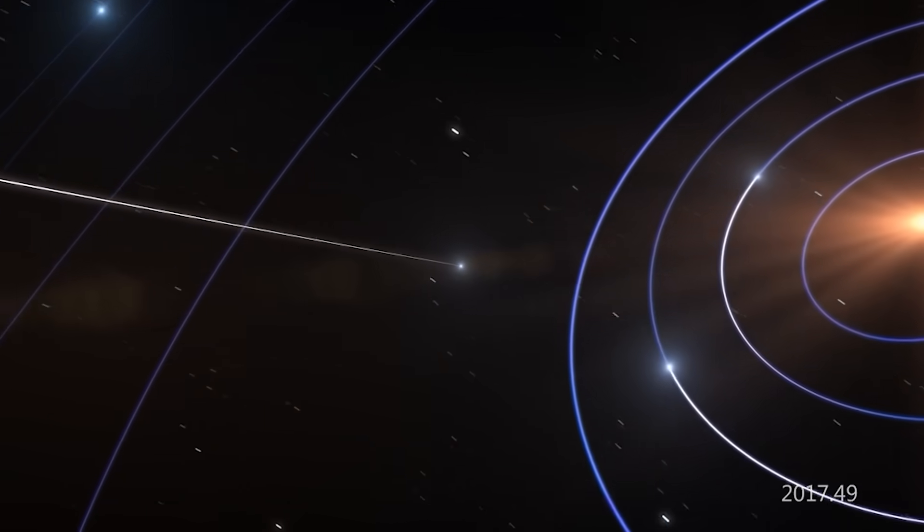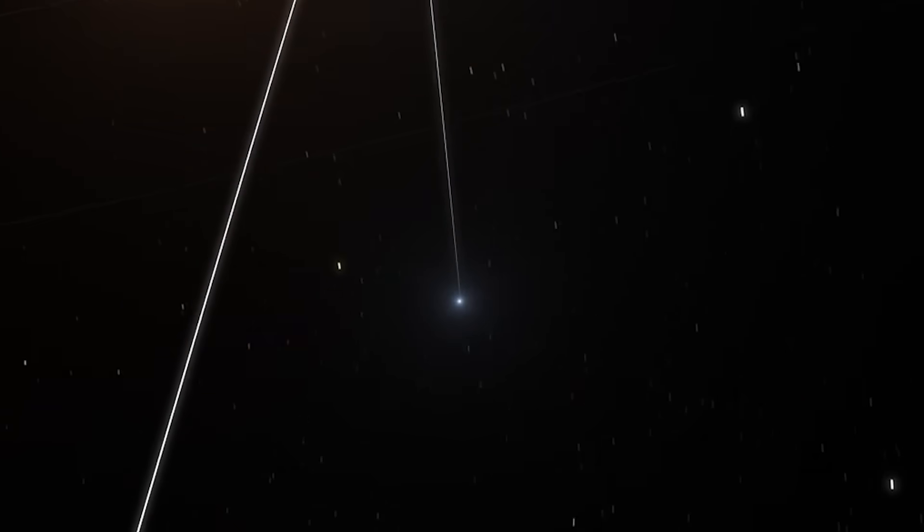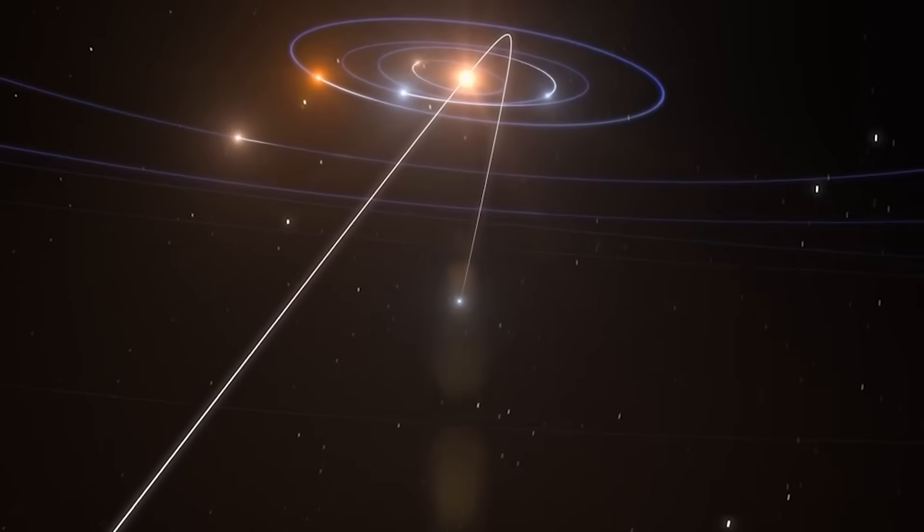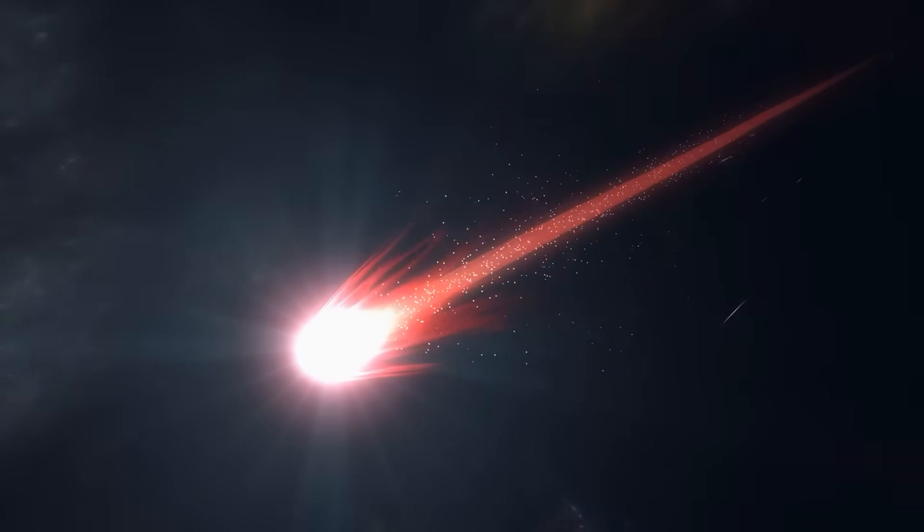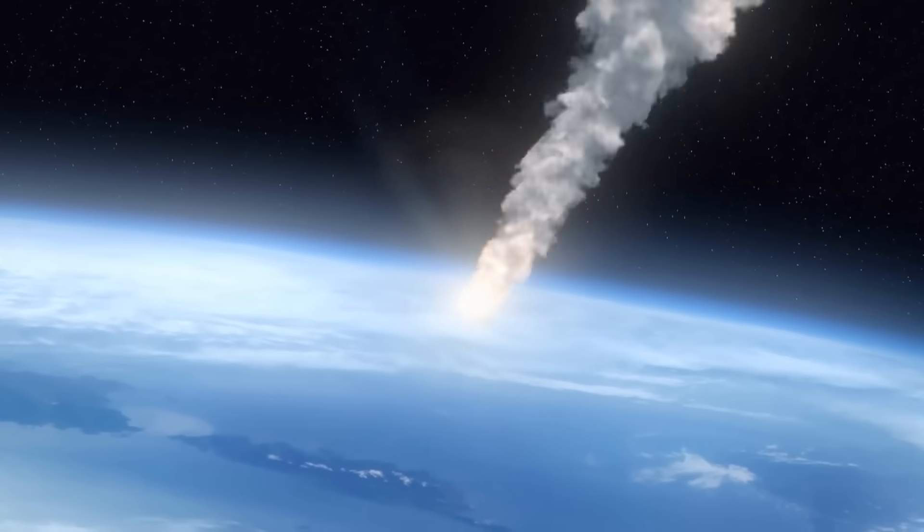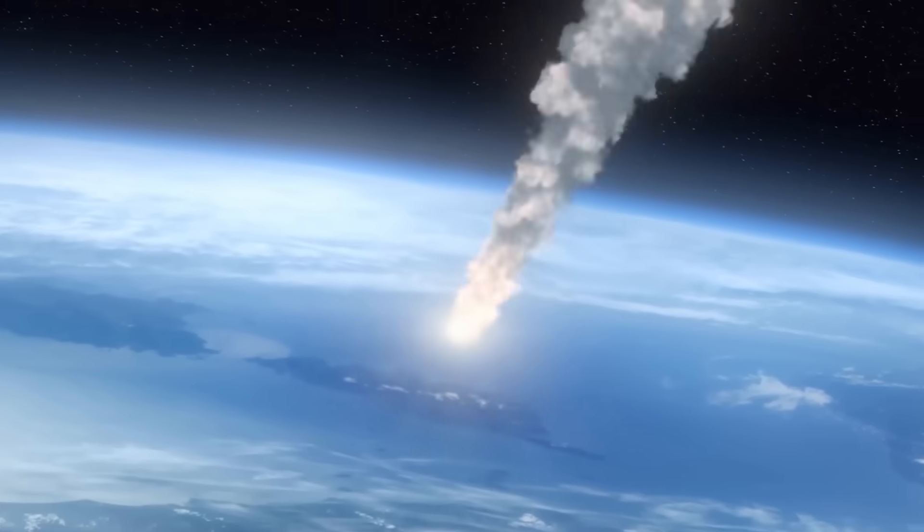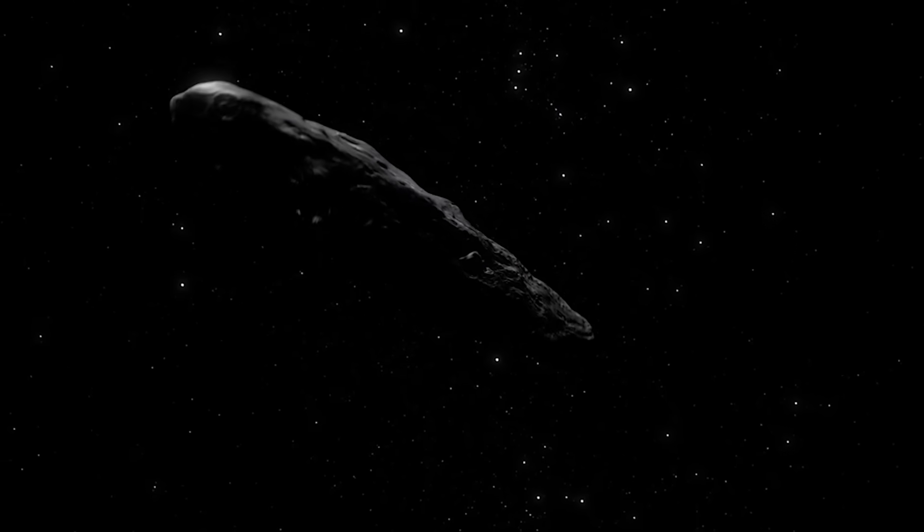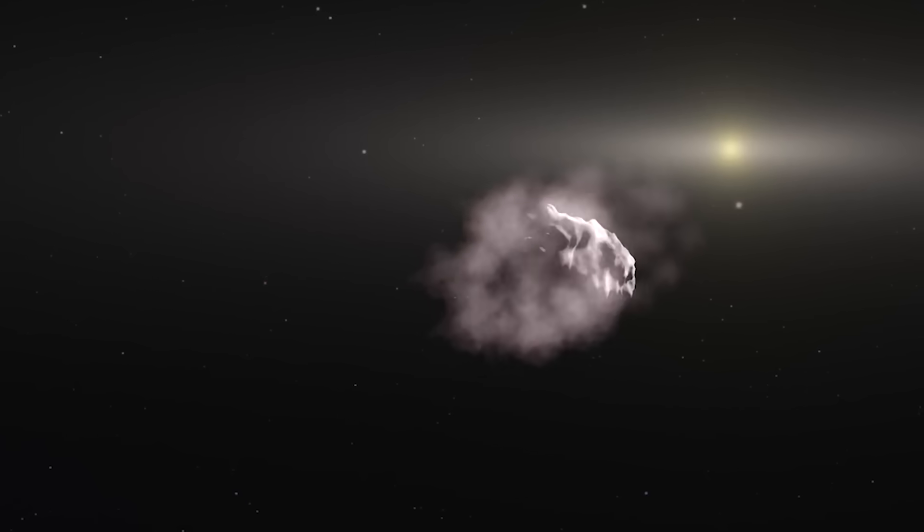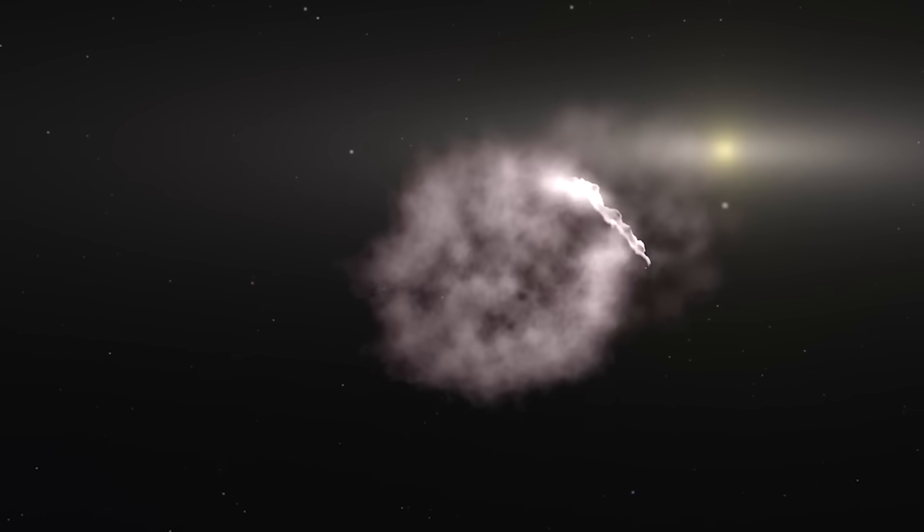But the weirdest thing about Oumuamua was its movement. As it flew away from the sun, it sped up. It was accelerating, pushed by a mysterious force that astronomers couldn't explain. Comets can speed up like this because as the sun heats them, they shoot out jets of gas, acting like tiny rocket thrusters. But here's the catch. Oumuamua had no visible tail, no coma, no outgassing whatsoever. So what was pushing it?